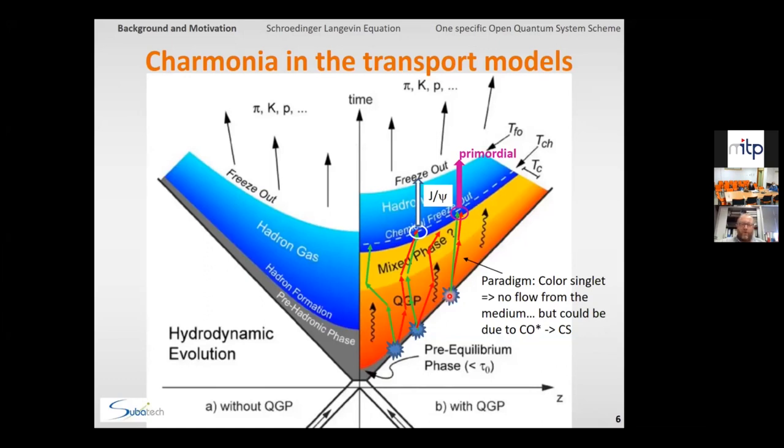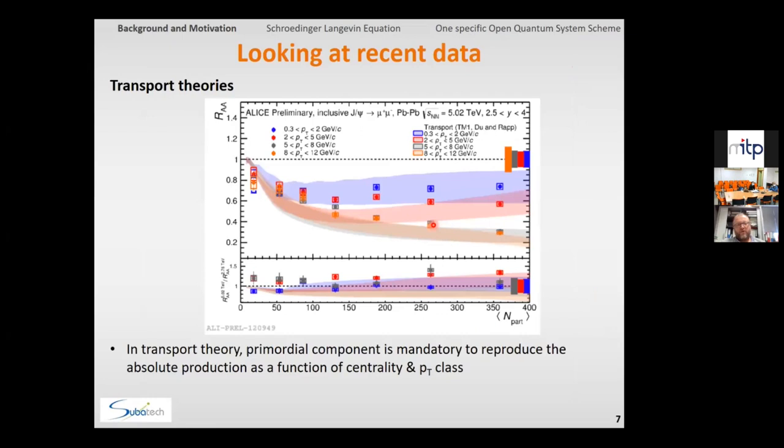However, this is nevertheless what transport models do in some sense, because the most advanced transport models on the market, they assume two components, one primordial component, which is usually taken to be a singlet through the full QGP with a given chance to be destroyed. So there is a kind of gamma rate of destruction per unit time. And on the top, they introduce a finite coalescence mechanism, where C and C-bar would find themselves on the late freeze-out boundary. And those transport models, or transport approach, they've been shown to do, on the viewpoint of phenomenology, a rather good job as compared to the experimental results.